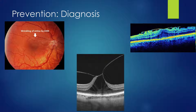So how do we prevent CME? The first step is to diagnose potential challenges before doing the surgery. In the color picture, you can see an epiretinal membrane with wrinkling and scar tissue formation on the surface of the retina. If you see that prior to your cataract surgery, great — you can tell the patient about this preexisting problem and then develop a plan for it.